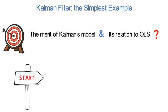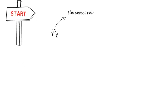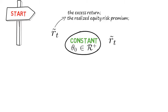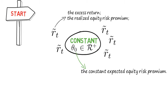So let's start. In this video I assume that the excess return of a stock, denoted as r-t, which you can also say is simply the realized equity risk premium, I assume it fluctuates randomly around a constant theta-0. So let's say theta-0 is a positive constant. Now you can interpret theta-0 as the constant expected equity risk premium.